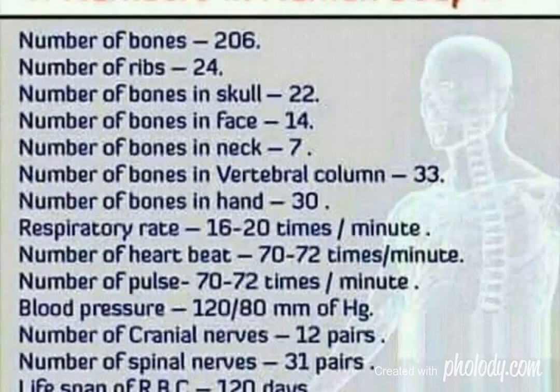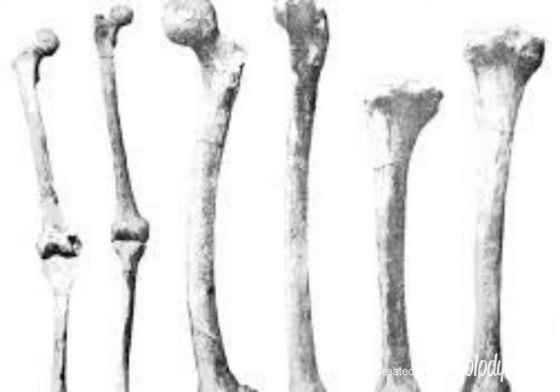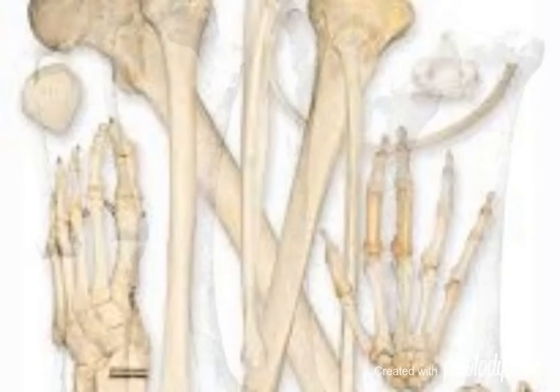Hello friends, I am from Exams Rider. In this video we will see the specialization numbers in the human body. Number of bones: 206. Number of ribs: 24.